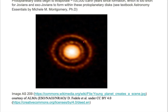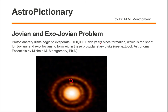This ring is a lack of gas and dust, meaning there must be some kind of large exo-Jovian forming within this ring. The problem with planet formation is that it takes about 100,000 Earth years for all of this gas and dust to leave the system by radiation pressure from the host star.